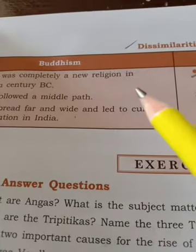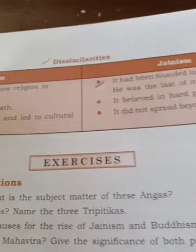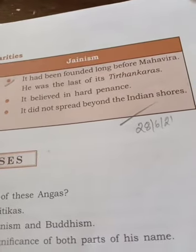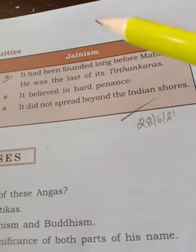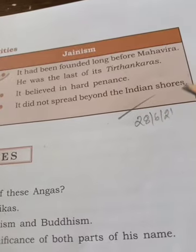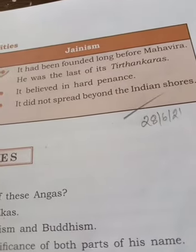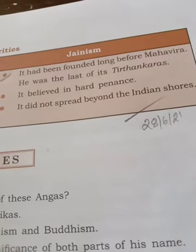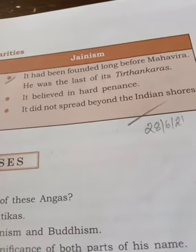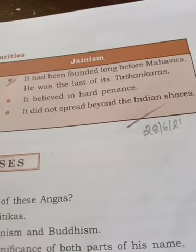Buddhism spread far and wide and led to cultural evolution in India. It spread beyond India to countries like Sri Lanka, Nepal, Tibet, Japan, China, and Myanmar. But Jainism did not spread beyond the Indian shores — it remained limited to India only and never spread to any other countries.